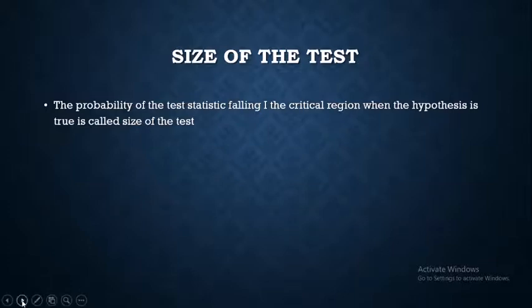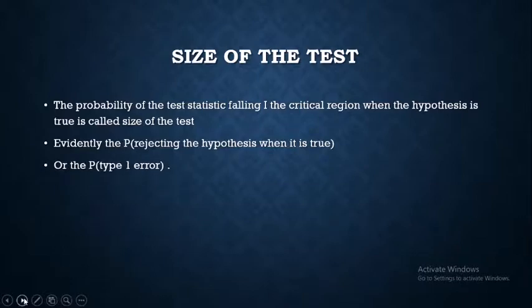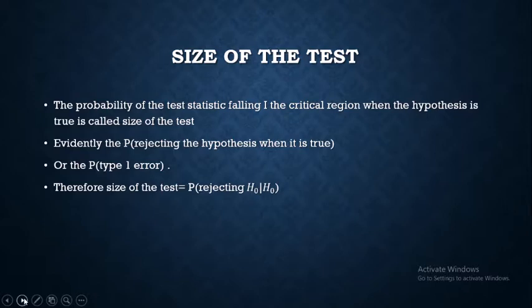The probability of the test statistic falling in the critical region is evidently the probability of rejecting the null hypothesis when it is true, which is also the probability of committing a type 1 error. Therefore, the size of the test, the significance level, and the probability of type 1 error are all equal to the probability of rejecting H0 when H0 is true, and this is denoted by alpha.